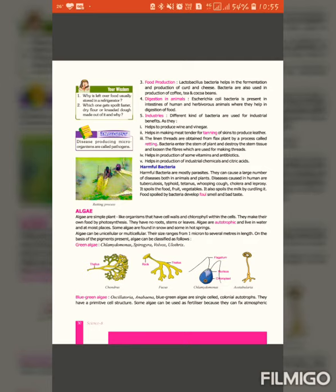Algae are autotrophic and live in water and moist places. Some algae are found in snow and some in hot springs. Some algae can be unicellular or multicellular. They can be one cell or many cells. Their size ranges from 1 micron, although they can be 40 to 60 meters long. Some can be very small and others very large.